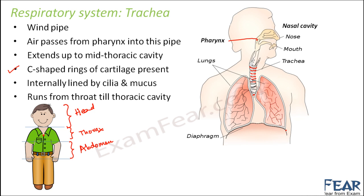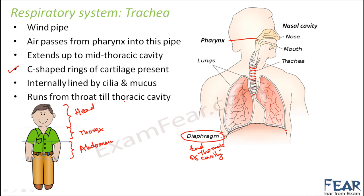This trachea runs from the throat till the thoracic cavity. Here you see a dome-shaped structure — this denotes the end of the thoracic cavity. After the thoracic cavity starts the abdominal cavity, where you have most of your digestive organs like the stomach, intestine, small intestine, liver, and pancreas. The thoracic cavity is filled with your lungs and some portion of the trachea.